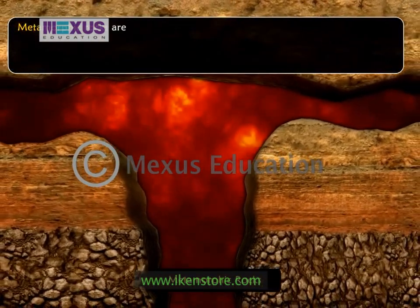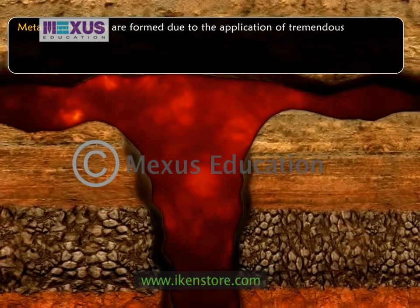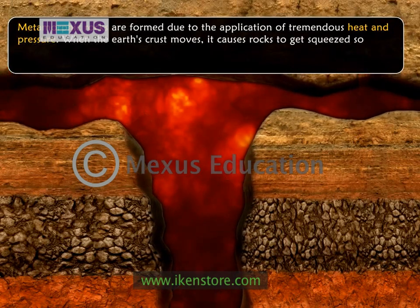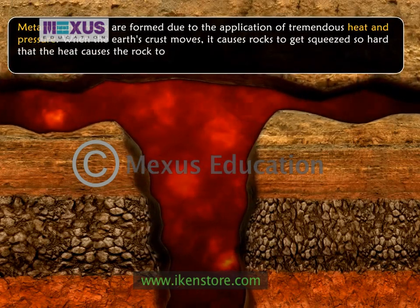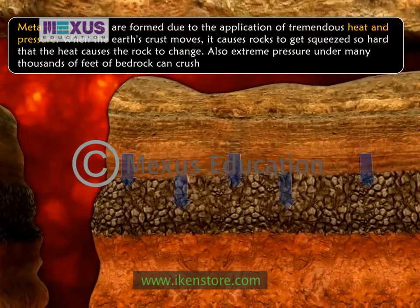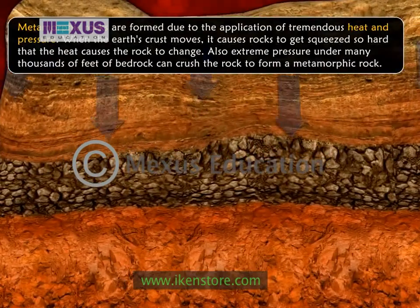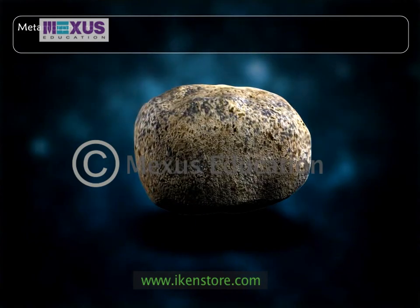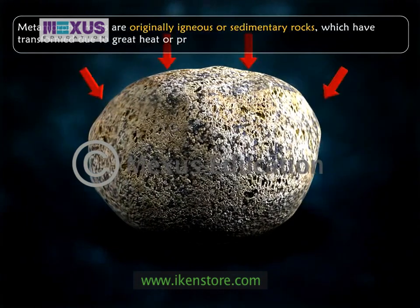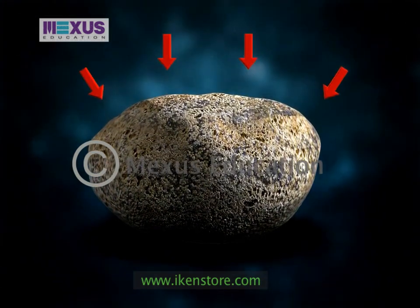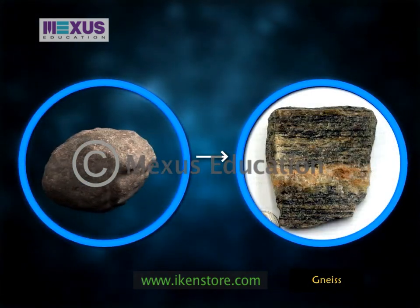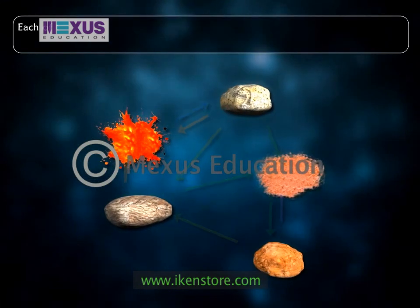Metamorphic rocks are those that change form due to the application of tremendous heat and pressure. When the earth's crust moves, it causes rocks to get squeezed so hard that the heat causes the rocks to change. Also, extreme pressure under many thousands of feet of bedrock can crush the rock to form a metamorphic rock. Metamorphic rocks are originally igneous or sedimentary rocks which have transformed due to great heat or pressure. For example, the sedimentary rock limestone metamorphoses into marble, and igneous rock granite changes into gneiss.